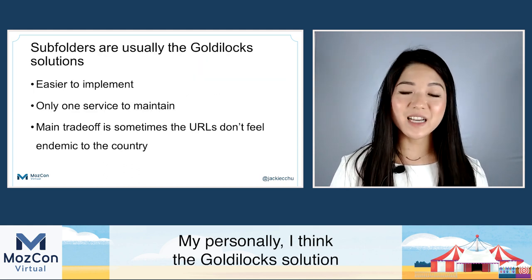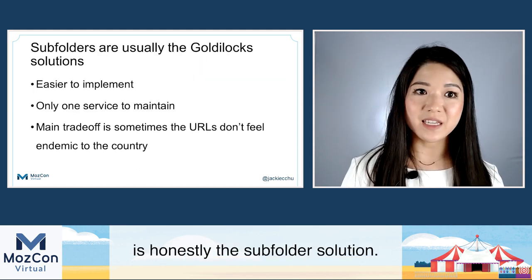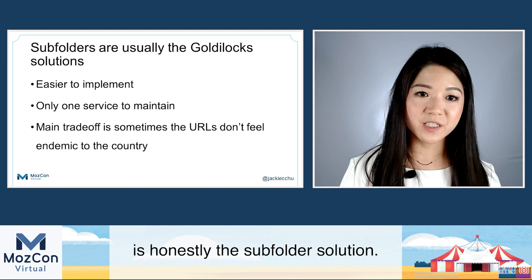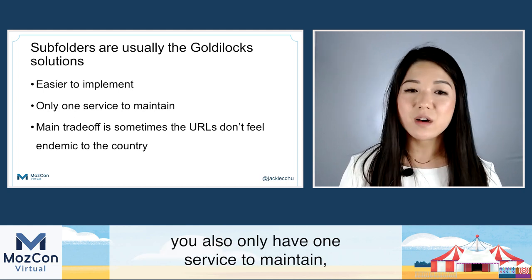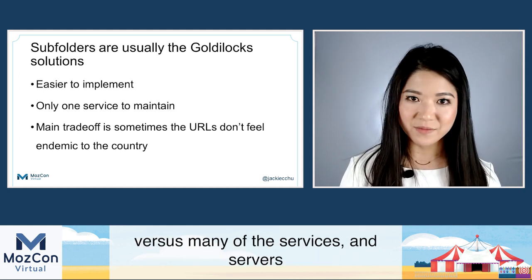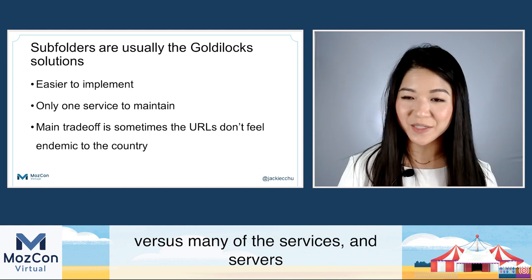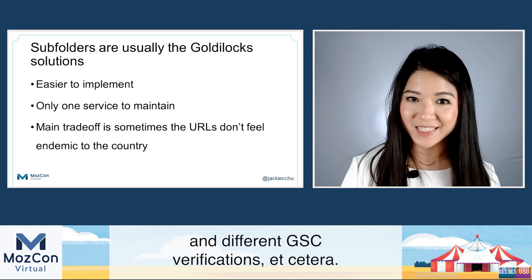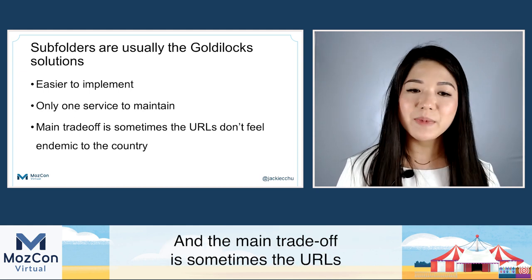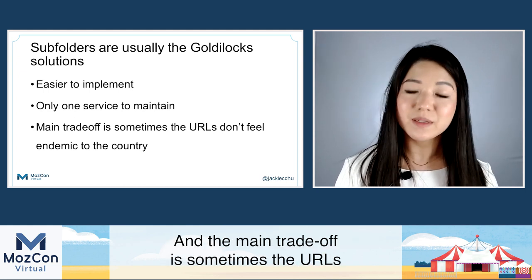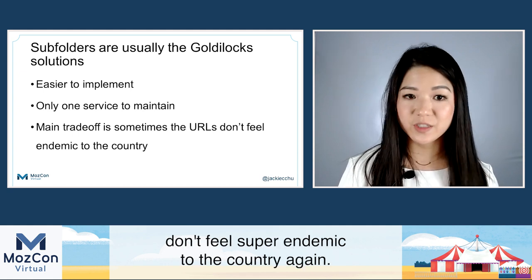My personal pick: I think the Goldilocks solution is honestly the subfolder solution. It's easier to implement, you only have one service to maintain versus many servers and different GSC verifications. The main trade-off is sometimes the URLs don't feel super endemic to the country.